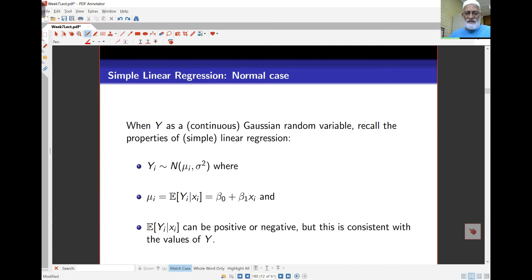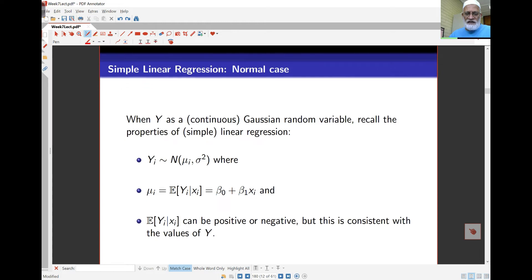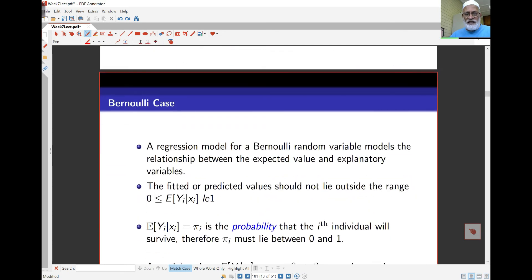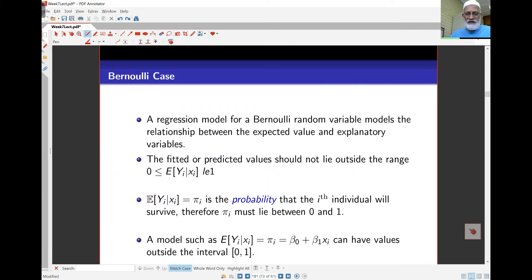In the simple case of linear regression where we have normal-based data, the responses are normal with mean μi and variance σ² fixed. For simple linear regression with only one x variable, the mean is given by a straight-line equation: given the value of xi, the mean is β0 + β1·xi. The mean here can be positive or negative depending on the values.